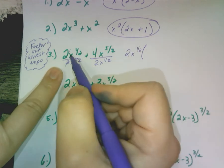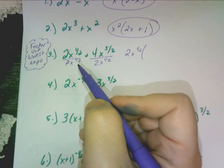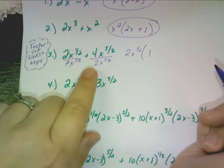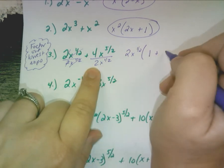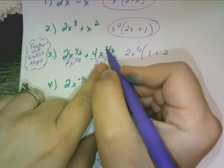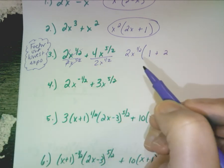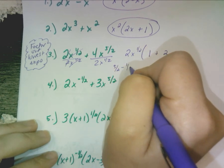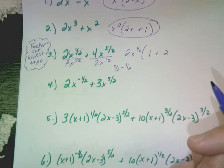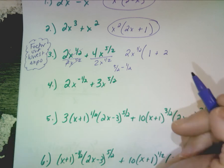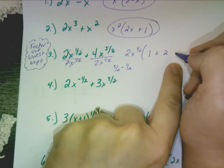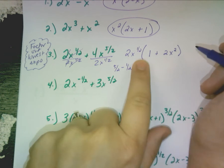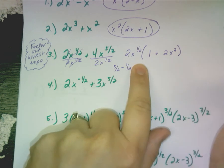So the 2 and 2 cancel. The x to the one half and the x to the one half also cancel to 1. The 4 and 2 cancel to 2. The five halves and the one half — what do you do with exponents when you're dividing? You subtract. Five halves minus one half? Four halves, which is 2 whole. So you have x to the 2. Can you do anything more? No, that's done.